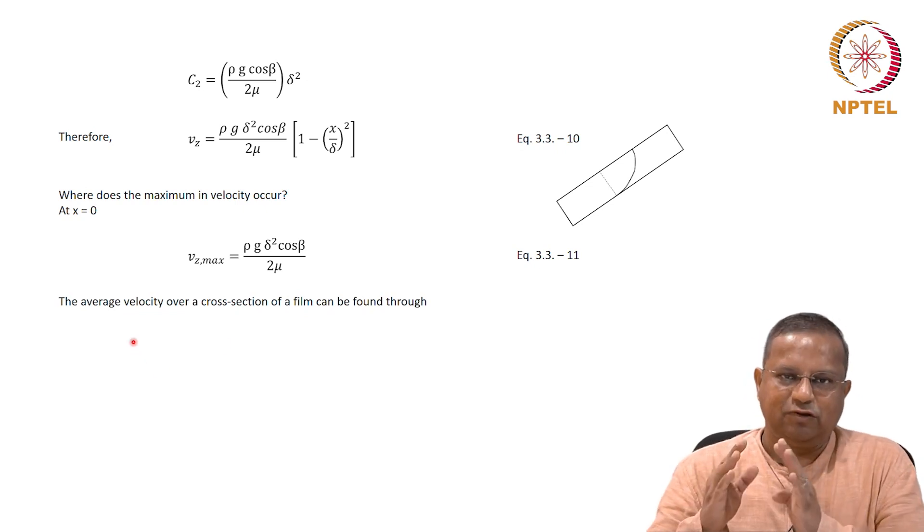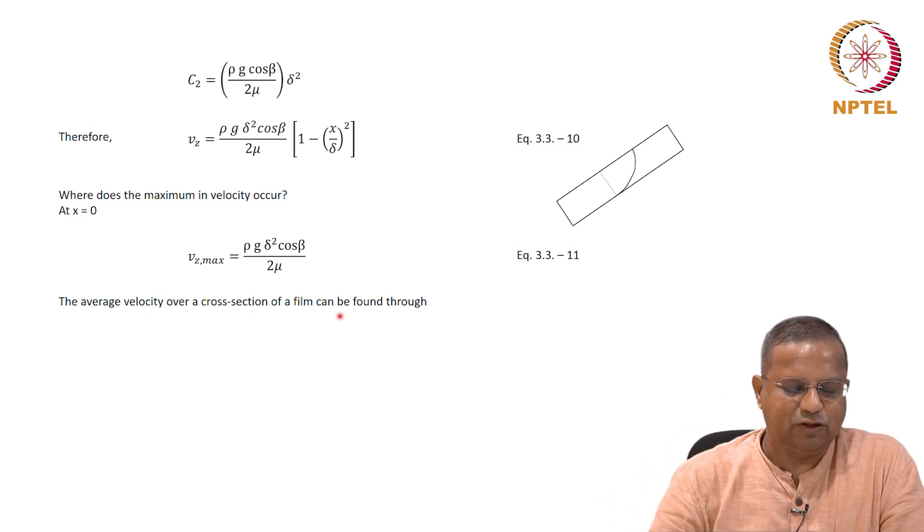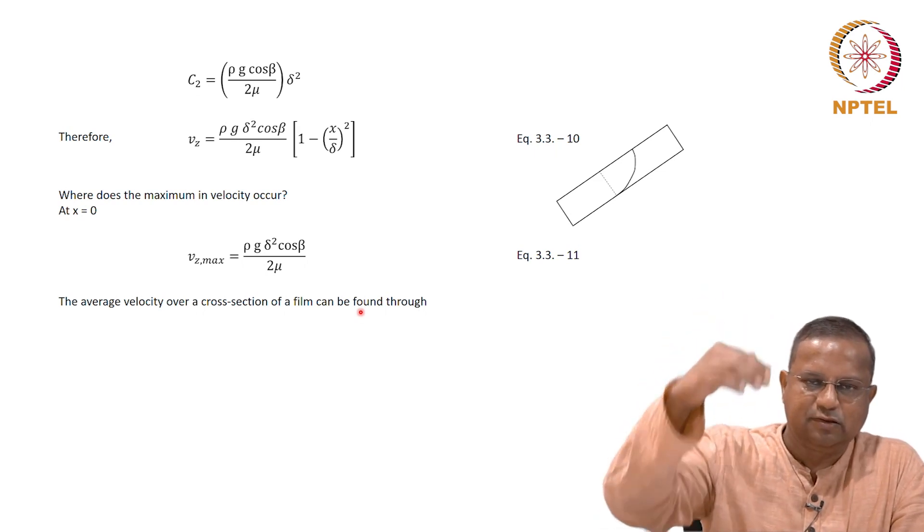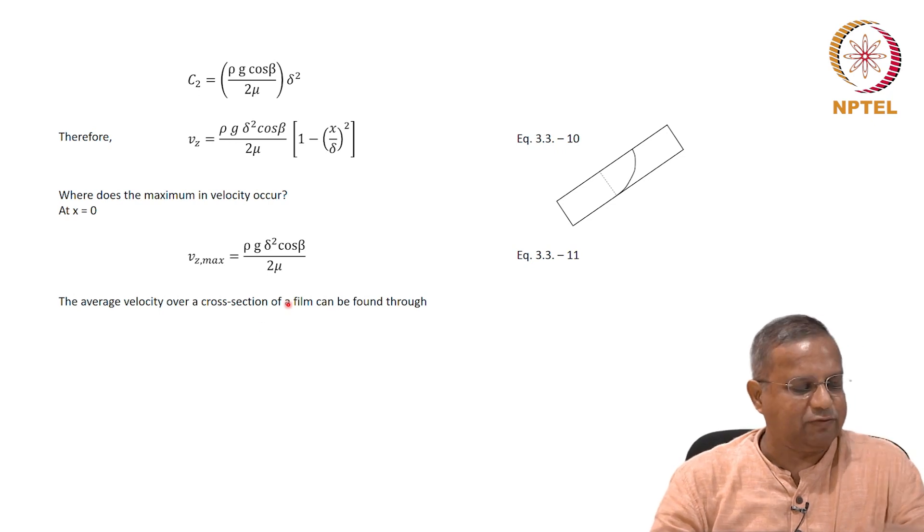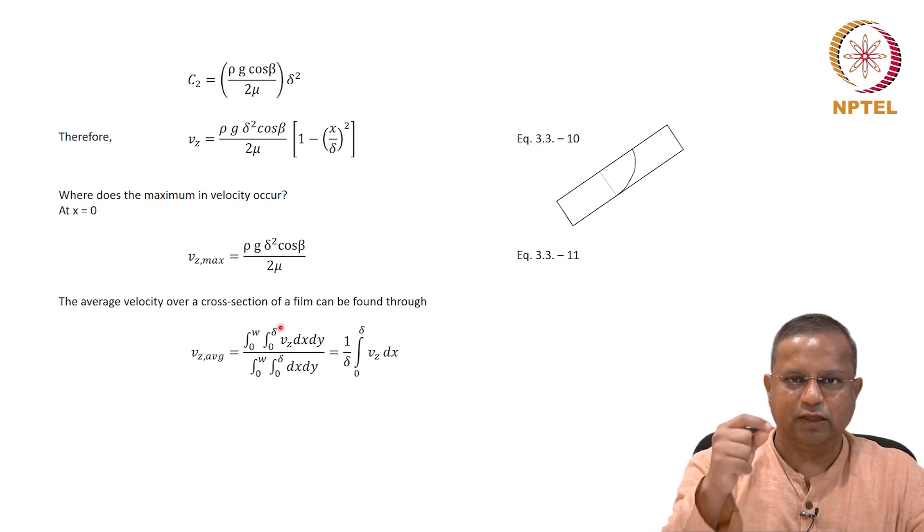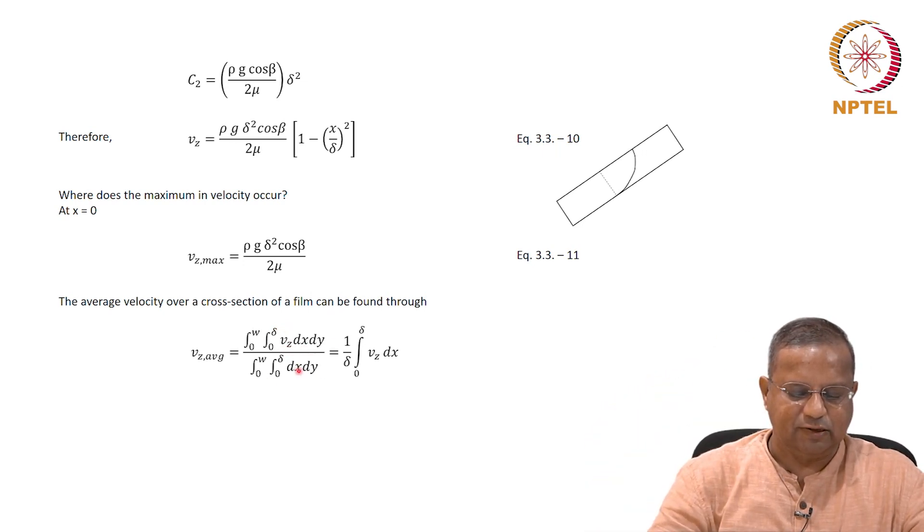We would also like to know the average velocity over the cross section of the film, because the velocity is varying at different points in the film. At the bottom most it is 0, at the top most it is the maximum. There is a certain variation across the film. Therefore, if you want to find out the average, you take area weighted average, and that is vz average. You take a double integral of y varying from 0 to w, x varying from 0 to delta, y is in this direction, x is in this direction, vz dx dy, and normalize it with respect to that area 0 to w, 0 to delta dx dy. As you can see, the w is the same at both ends. Therefore, the numerator and denominator will cancel out and the remaining would be 1 by delta integral of 0 to delta vz dx. Equation 3.3-12.